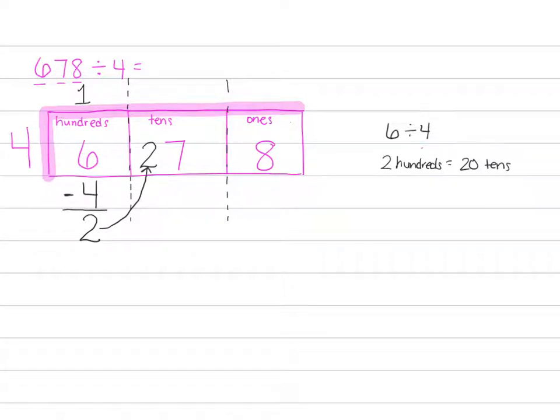Let's regroup this 2 into the tens place. Because 2 hundreds equals 20 tens. Now we have our 20 tens plus the 7 that were already there, which is how we get 27 tens.